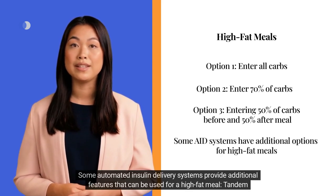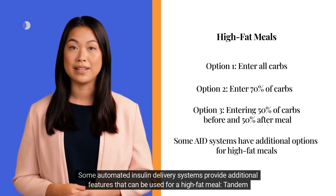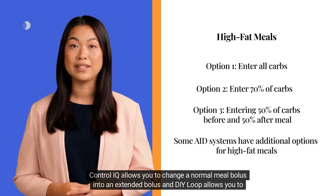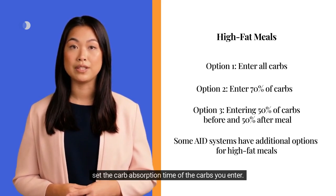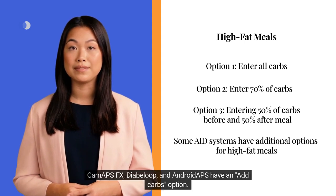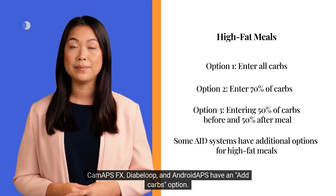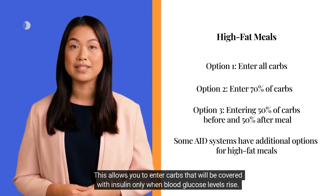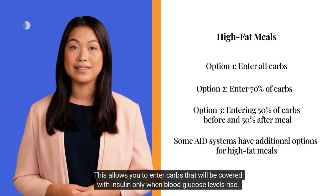Some automated insulin delivery systems provide additional features for high-fat meals. Tandem Control IQ allows you to change a normal meal bolus into an extended bolus, and DIY Loop allows you to set the carb absorption time. CAM-APS-FX, Diabeloop, and AndroidAPS have an Add Carbs option, which allows you to enter carbs that will be covered with insulin only when blood glucose levels rise.